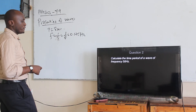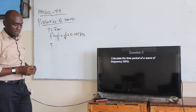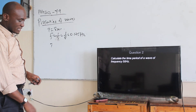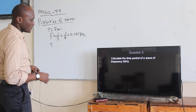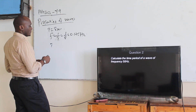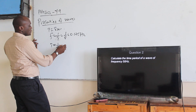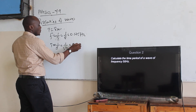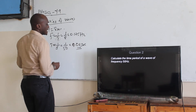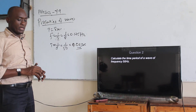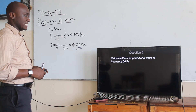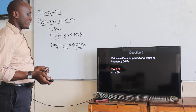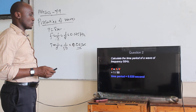Calculate the time period for a wave of frequency 50 hertz. T is equal to one over F, which means one over fifty, which gives us zero point zero two seconds. So the time period is zero point zero two seconds.